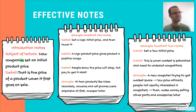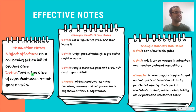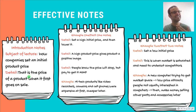You want to start by getting just what the subject is — what the academic term or concept is. In this case, it's how companies set an initial product price. And then you want to get some of the detail that comes along with that — really the definition. In this case I got: that is the price of a product when it first goes on sale.